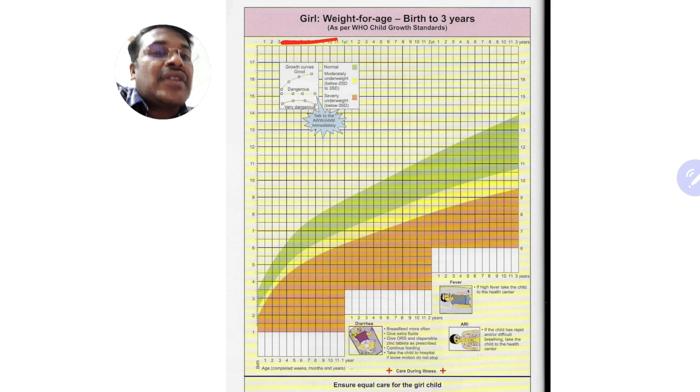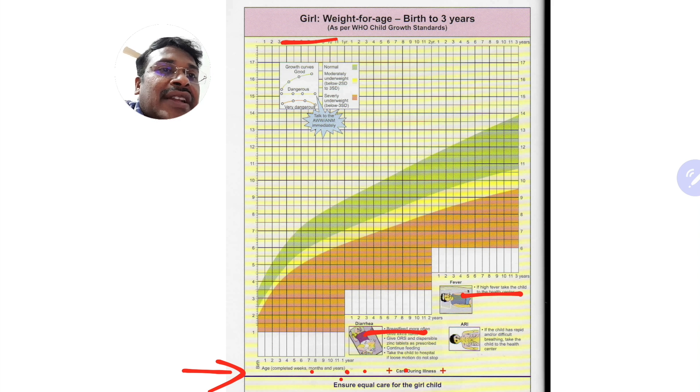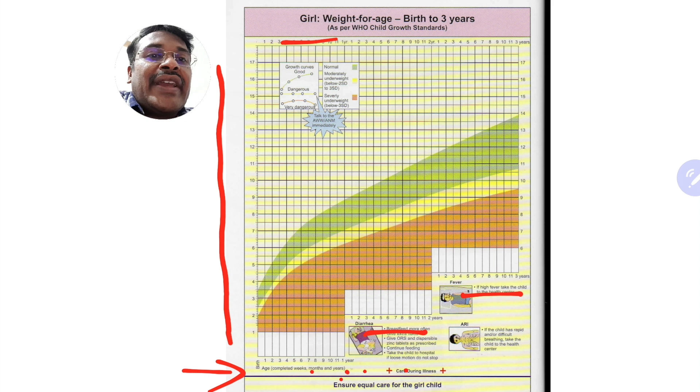There is separate growth chart for girls and boys and in the growth chart what is plotted here is the age in terms of month. First month, second month, third month, fourth month like that till first year, then this is second year and this is third year. So the growth chart is for three years and in the left hand side the column what is given here is the weight in kilograms.